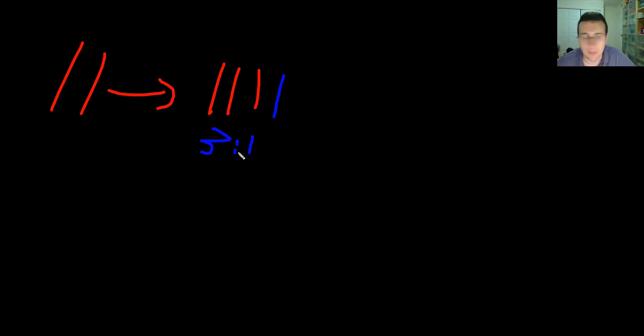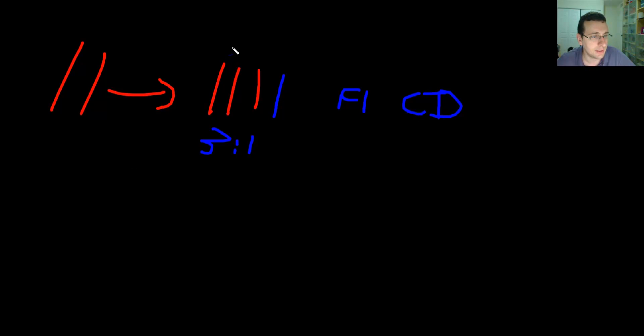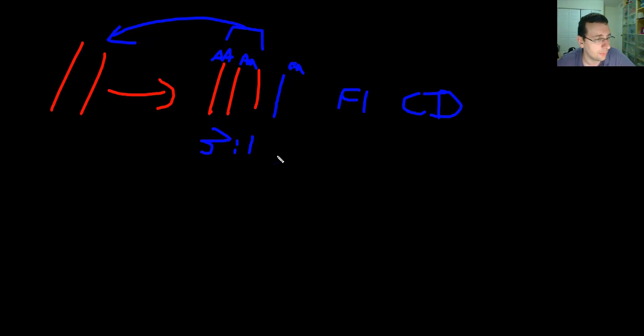Which cross gives us a 3 to 1 ratio? You should recognize this is an F1 cross — specifically a complete dominance F1 cross. You have two homozygous and one heterozygous, and then one that is recessive. The three of them all look dominant because we're talking about complete dominance, and then one looks recessive, creating the different look.